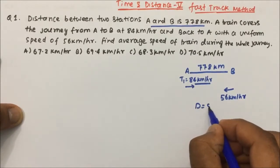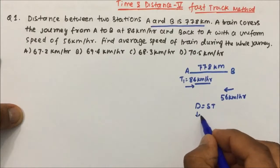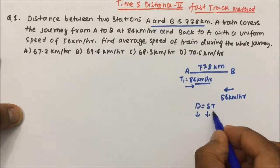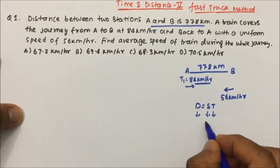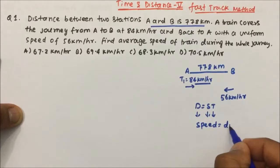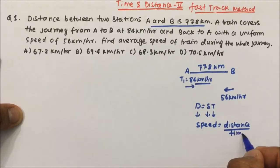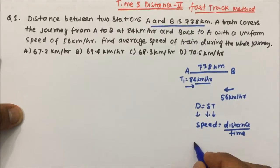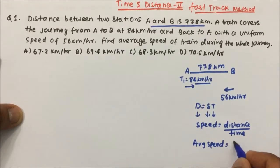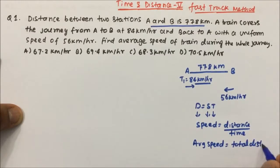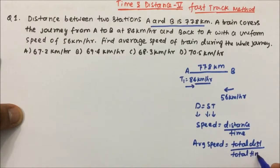We know the formula D equals S into T, meaning distance equals speed into time. So speed will be distance divided by time. And in the case of average speed, average speed equals total distance divided by total time.